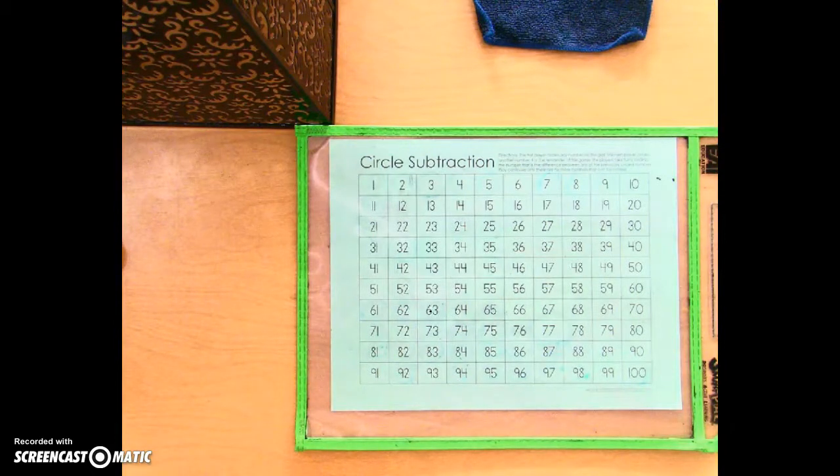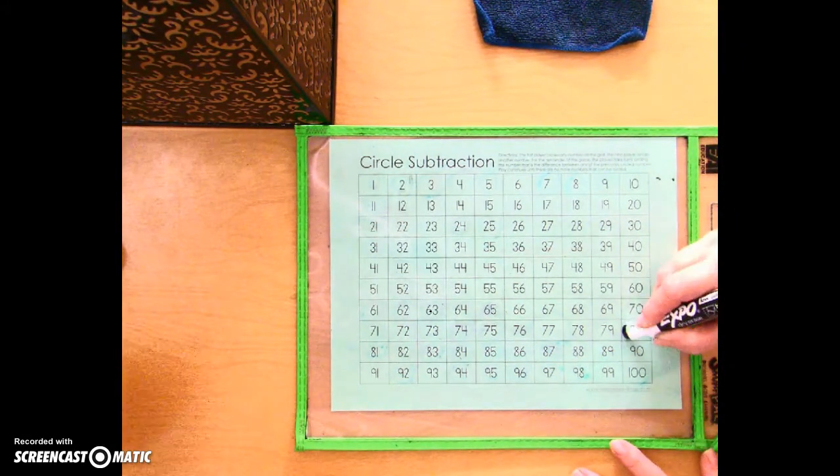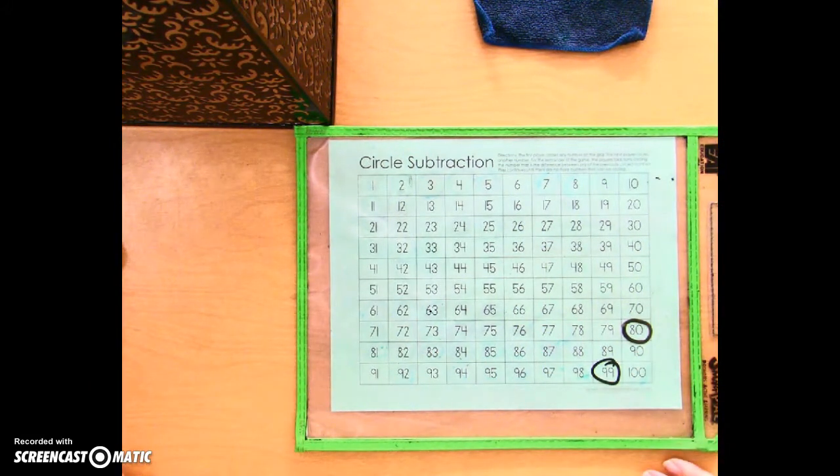Alright, so we're going to show you how to play Circle Subtraction. Up to four players can play. Circle any number you want on the board. Then the next player for the next play...